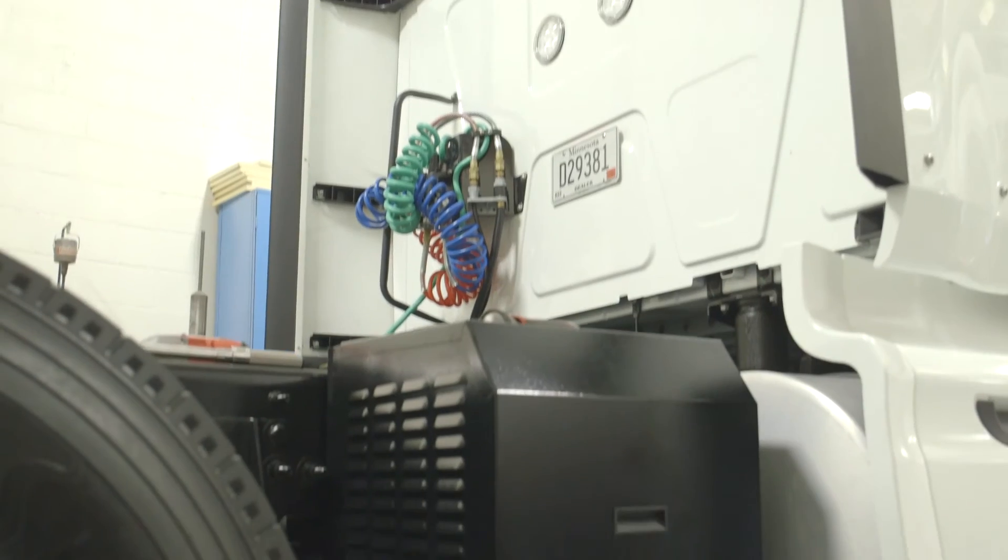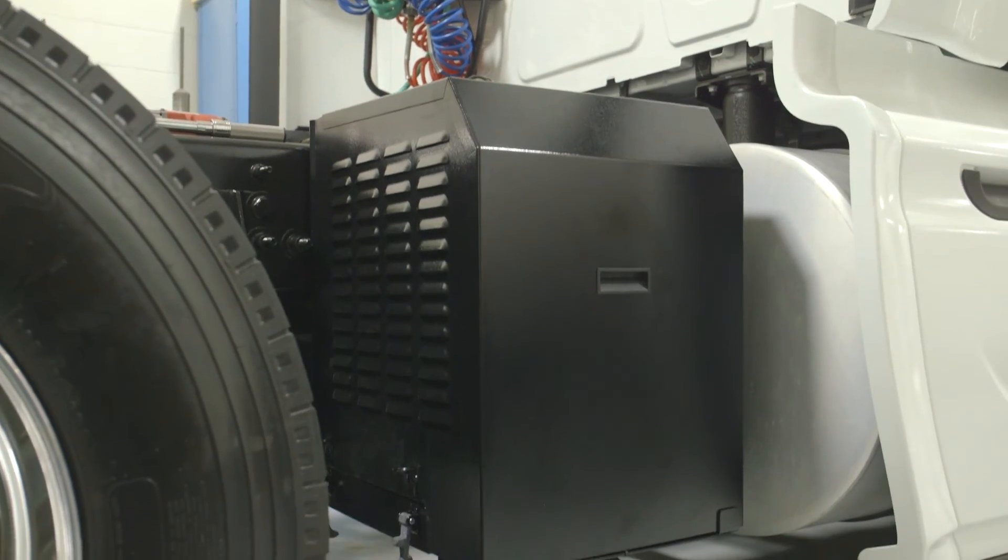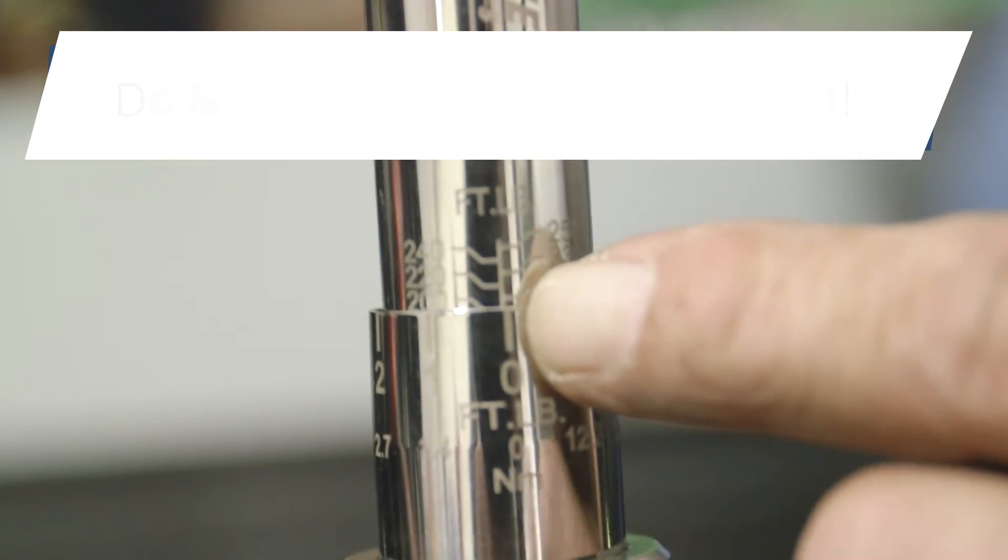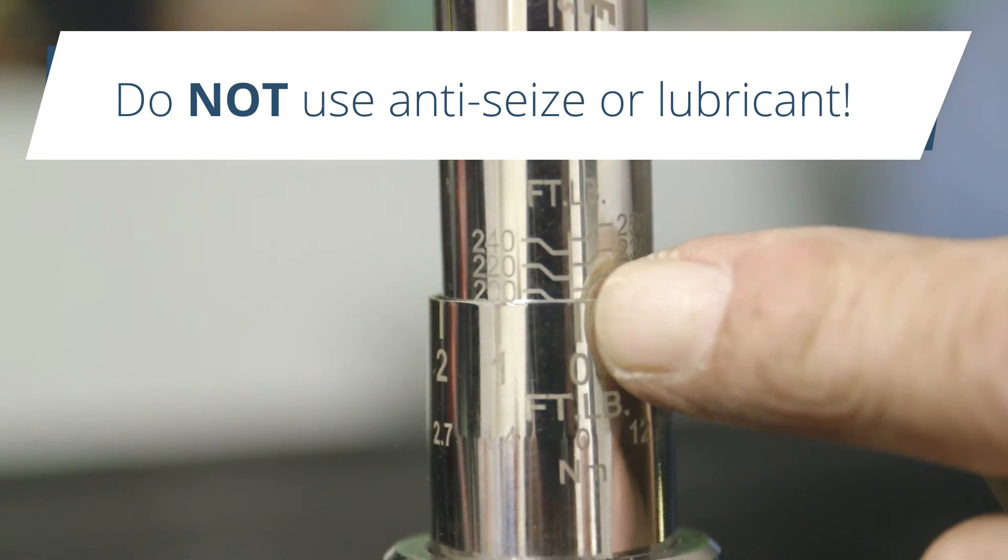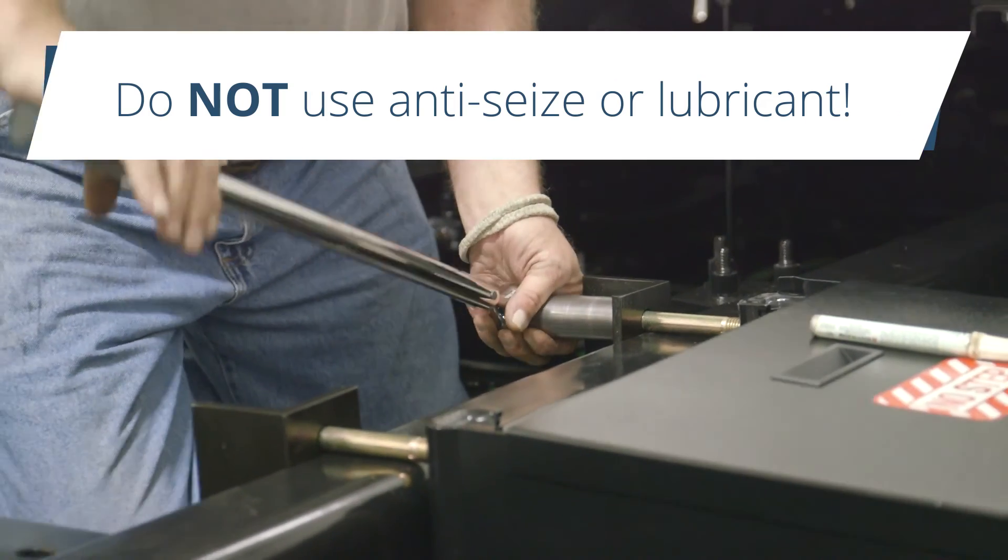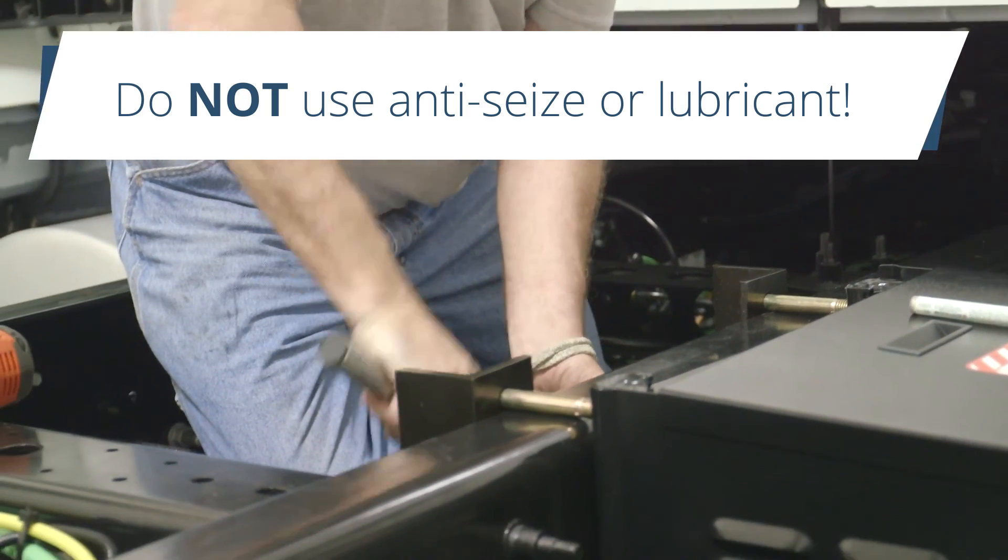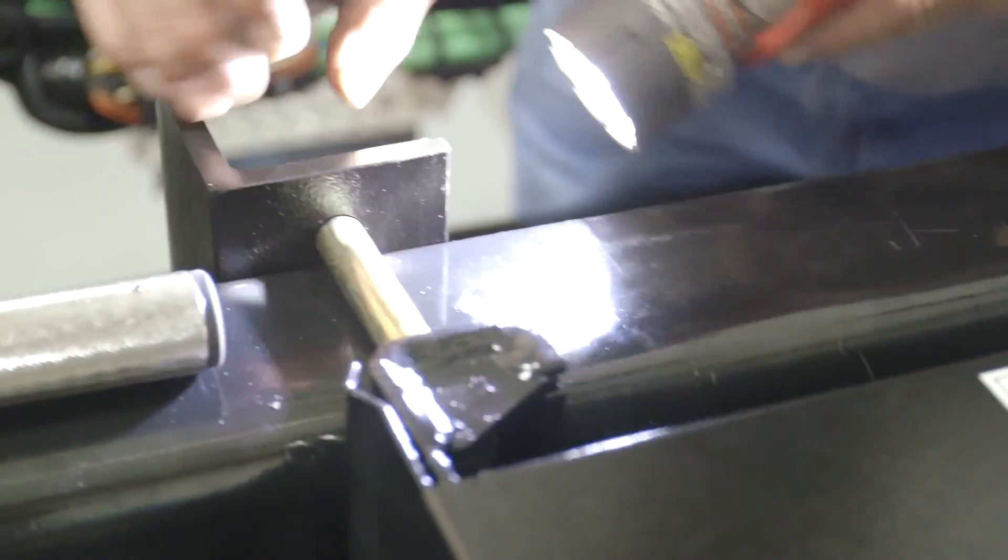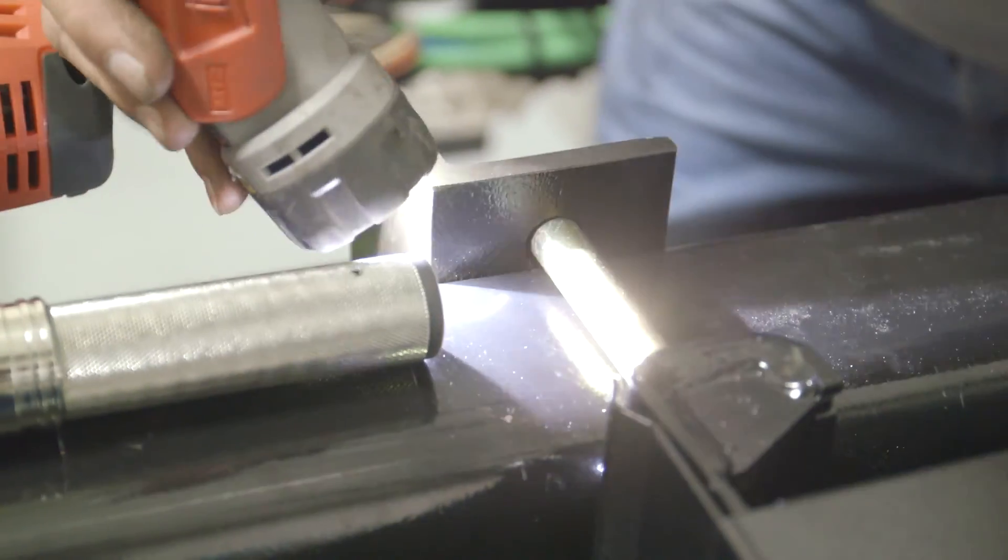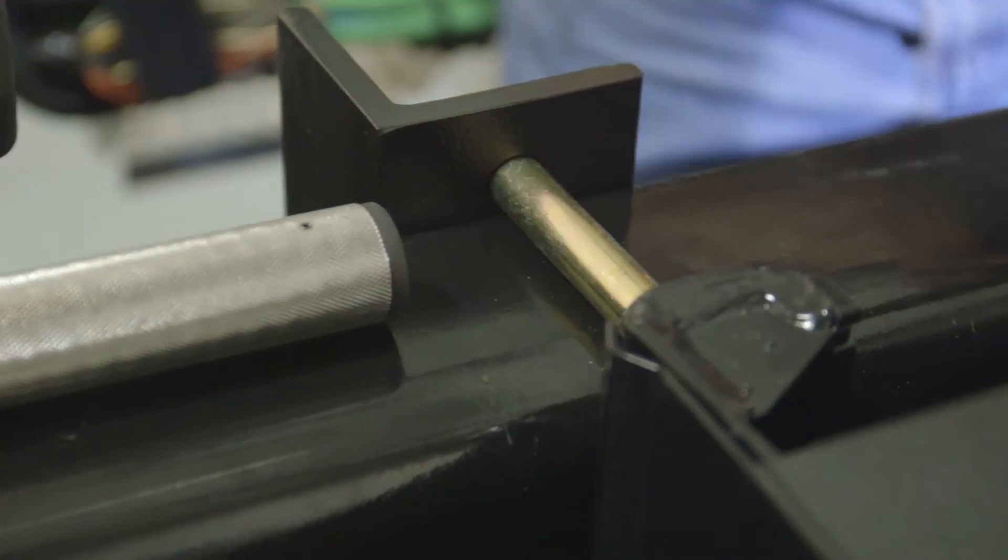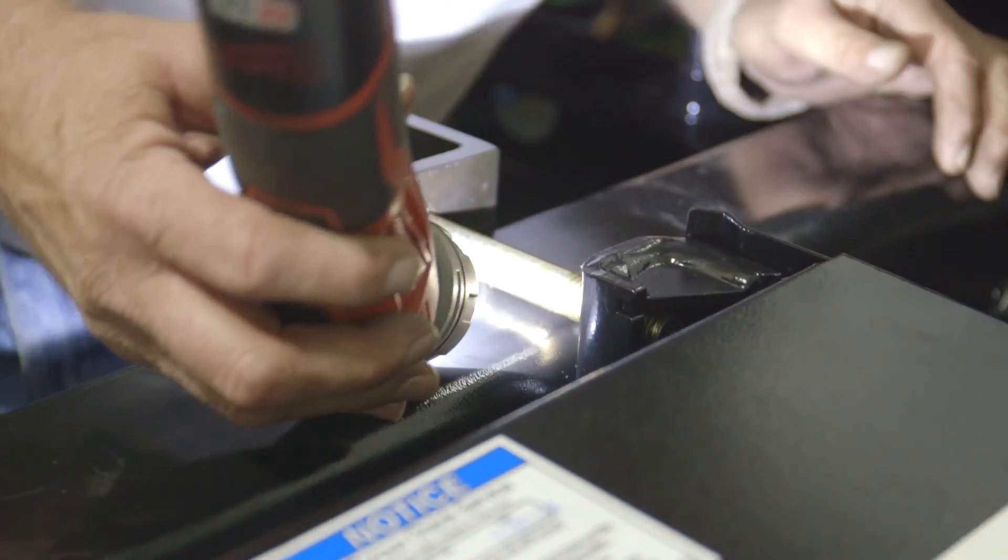You have now completed mounting the APU's frame rail unit to the frame. All bolts should be torqued to 212 foot-pounds. The torque value is a dry torque value. Do not use anti-seize or any other lubricant. There should not be any gaps between the truck frame and the APU unit and the top APU mounting bolts should be resting on top of the truck's frame.